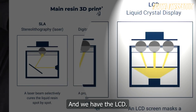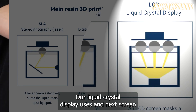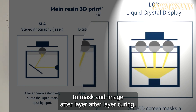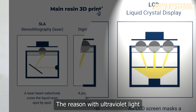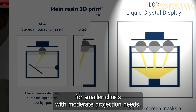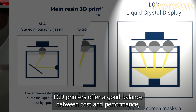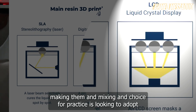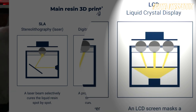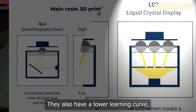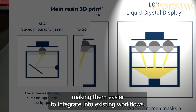LCD, or liquid crystal display, uses an LCD screen to mask an image of the layer, curing the resin with ultraviolet light. It's cost-effective and efficient, suitable for smaller clinics with moderate production needs. LCD printers offer a good balance between cost and performance, making them an excellent choice for practices looking to adopt 3D printing without a significant upfront investment. They also have a lower learning curve, making them easier to integrate into existing workflows.